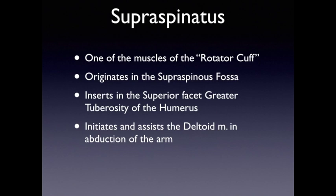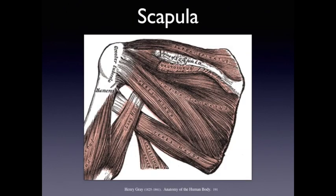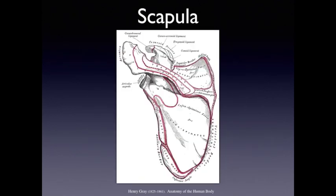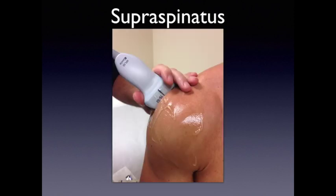Moving on to the supraspinatus — it's part of the rotator cuff, and it inserts in the superior facet of the greater tuberosity of the humerus. It initiates and assists the deltoid in abduction of the arm. From Grey's Anatomy, you can see the supraspinatus and the scapula with the fossa where it originates. We're going to position the transducer at the lateral border of the acromion, roughly in a coronal orientation.